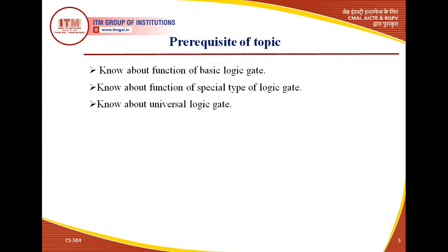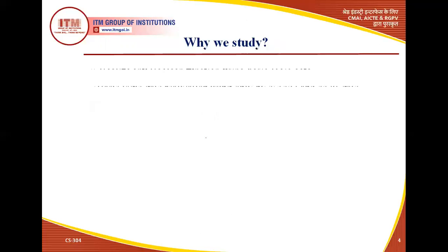Prerequisites of the topic: you should know the function of basic logic gates — AND gate, OR gate, and NOT gate — and special type logic gates such as XOR gate and XNOR gate, and also know about the universal logic gates — NAND gate and NOR gate. We will quickly revise the function of universal logic gates, that means NAND gate and NOR gate, because we implement all other types of logic gates using these universal logic gates.